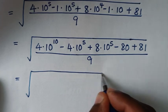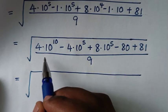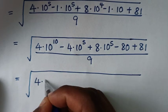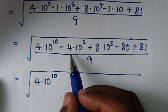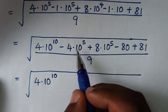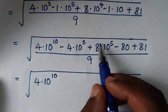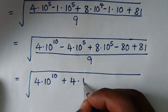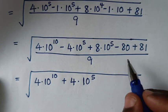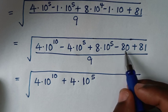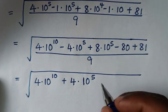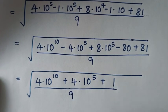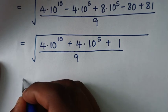In the next step, it will be equal to the square root of: 4 times 10 to the power 10, then combining minus 4 times 10 to the power 5 and plus 8 times 10 to the power 5 — taking 8 minus 4 equals 4 — giving plus 4 times 10 to the power 5, then 81 minus 80 equals 1, so plus 1, all over 9.